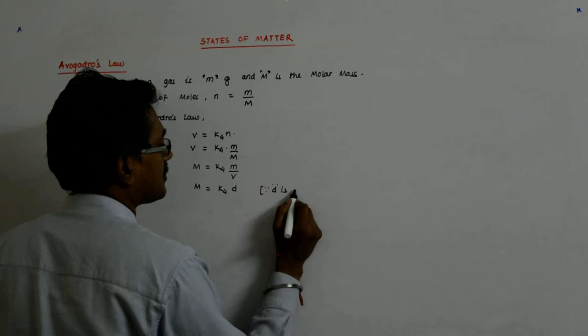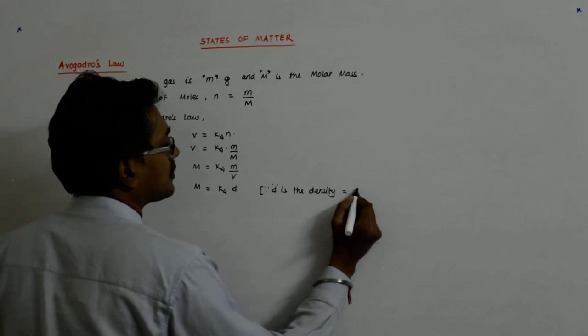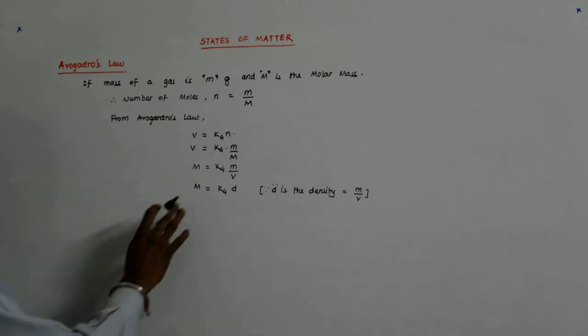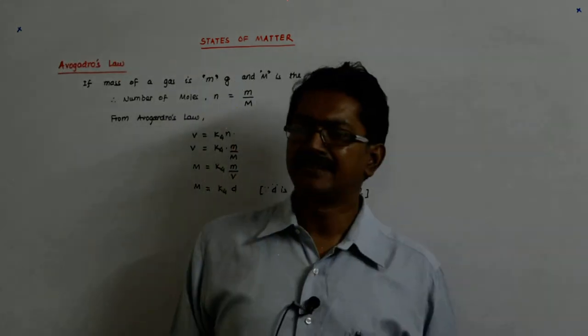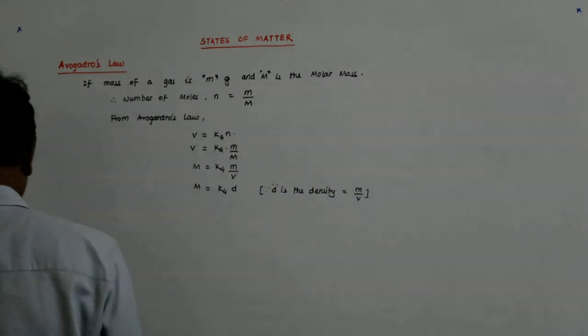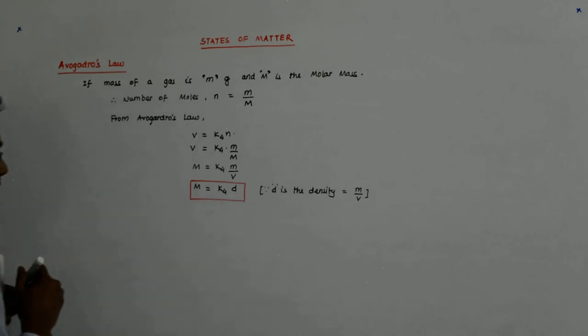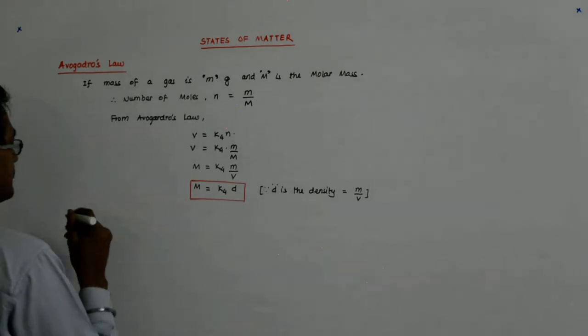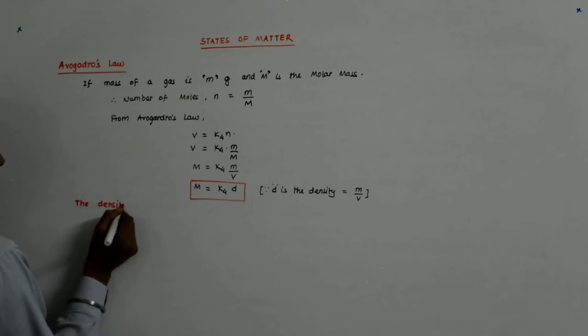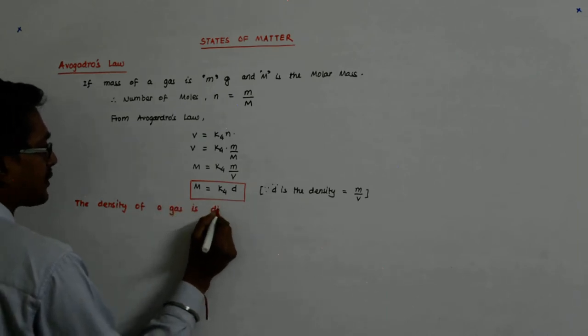So this, where d is equal to m upon v, where d is the density and it is equal to mass upon volume. This is the density. What does that tell us? That the density of the gas is directly proportional to the molar mass.